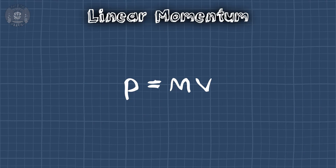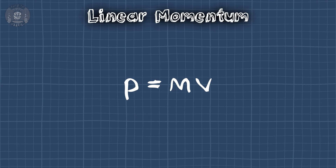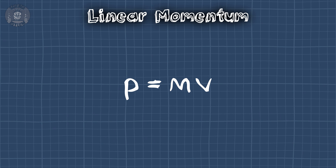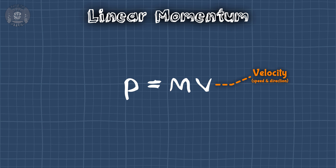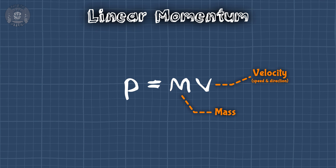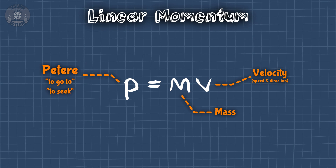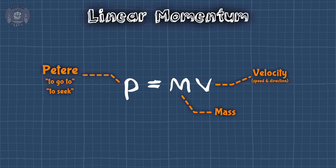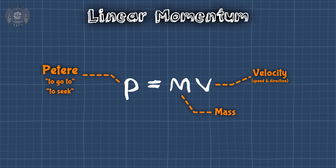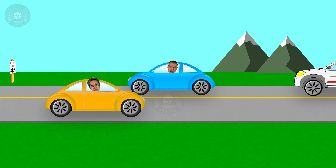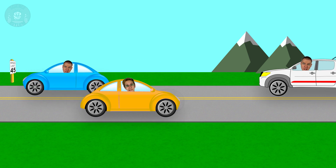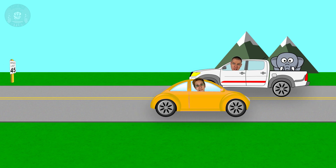So, momentum. The first time students see it, it's written like this. The V stands for velocity and the M stands for mass. The P is short for a Latin word meaning 'to go to or seek.' It's a nice simple relationship — you can have more momentum by moving faster or by having more mass.